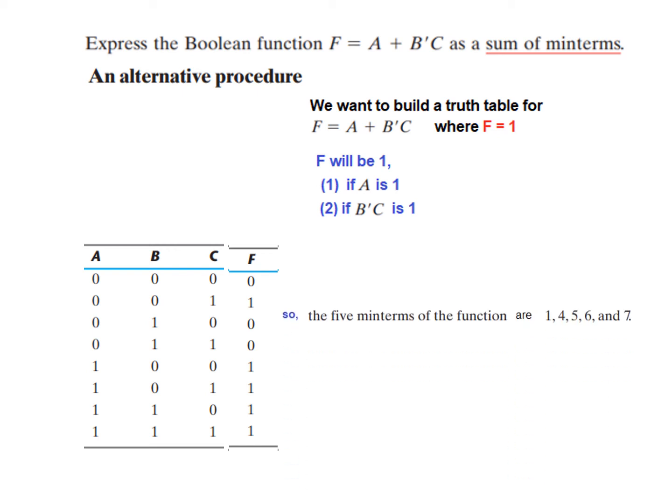And so from here, we can write the minterms directly. This is m1, 2, 3, 4, 5, 6, 7, so 1, 4, 5, 6, 7.